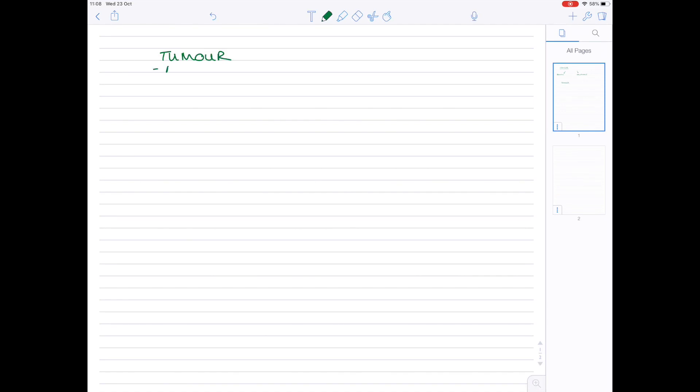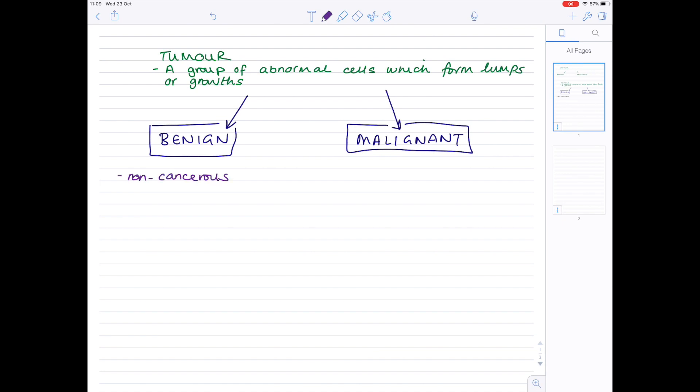A tumor is a group of abnormal cells that cause lumps or growths. There are two types: benign tumors and the malignant type. Benign tumors we tend to say are non-cancerous, and really the reason for this is because they do not spread to other parts of the body.